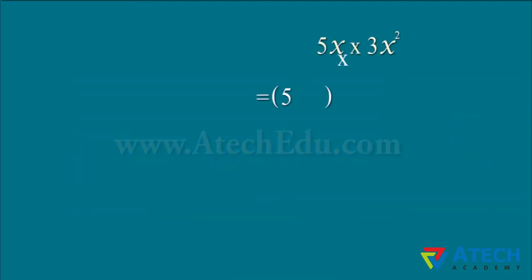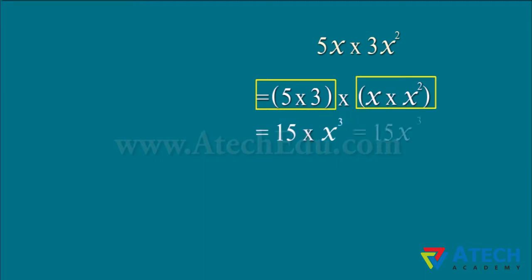Let us find the product of two monomials, 5x and 3x². First, we shall find the product of coefficients of both the monomials, and then we shall find the product of the algebraic factors of both the monomials.